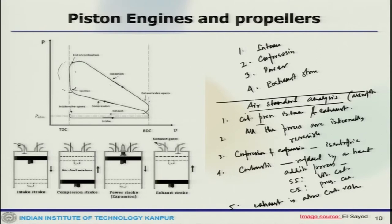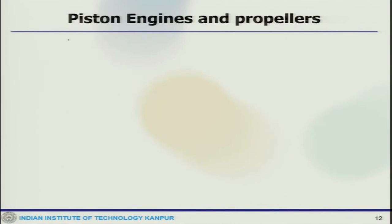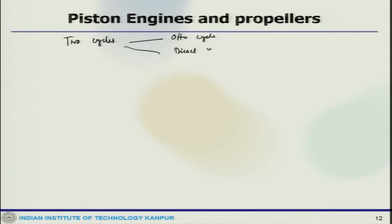We will talk about two cycles here: one is the Otto cycle and the other is the Diesel cycle. The Otto cycle is for the spark ignition engine, and the Diesel cycle is for the compression ignition analysis.